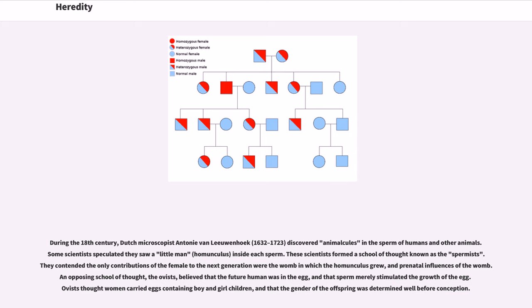During the 18th century, Dutch microscopist Antony van Leeuwenhoek (1632-1723) discovered animalcules in the sperm of humans and other animals. Some scientists speculated they saw a little man, homunculus, inside each sperm. These scientists formed a school of thought known as the spermists. They contended the only contributions of the female to the next generation were the womb in which the homunculus grew and prenatal influences of the womb.